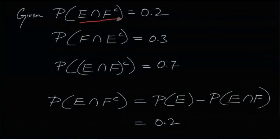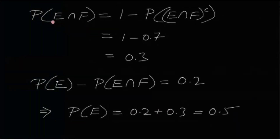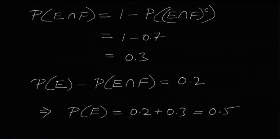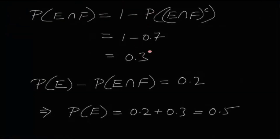The three given probabilities are P(E ∩ F^c), P(F ∩ E^c), and P((E ∩ F)^c). From the first, P(E ∩ F^c) = P(E) − P(E ∩ F) = 0.2. Now, P(E ∩ F) = 1 − P((E ∩ F)^c) = 1 − 0.7 = 0.3. So P(E ∩ F) = 0.3.